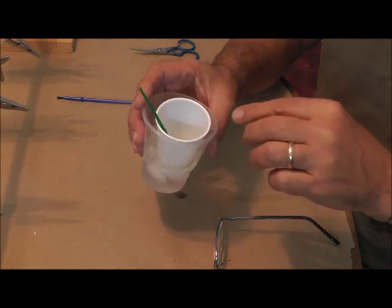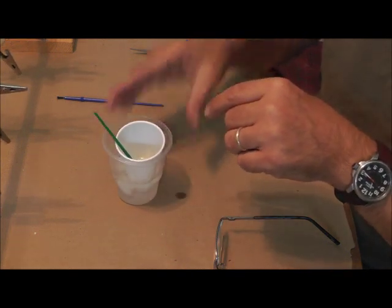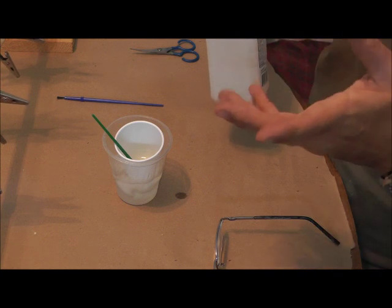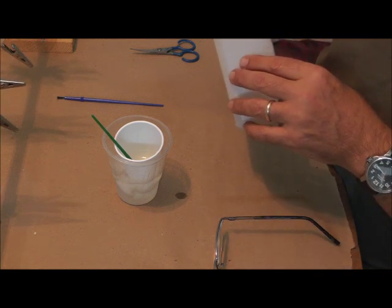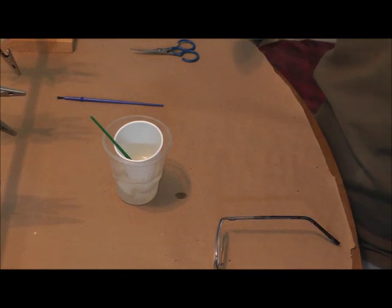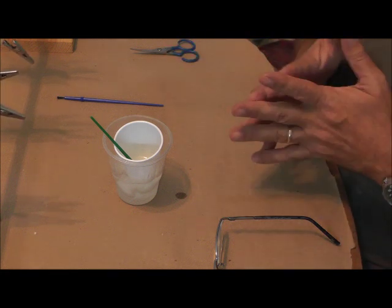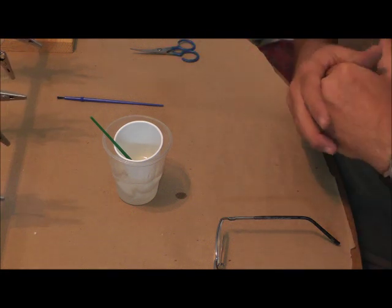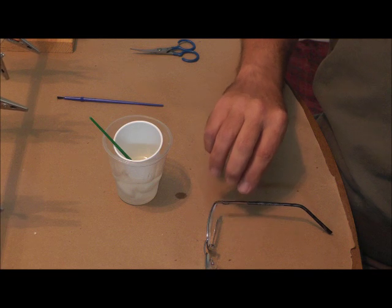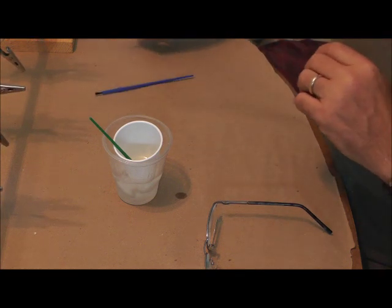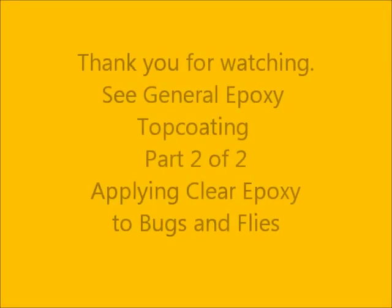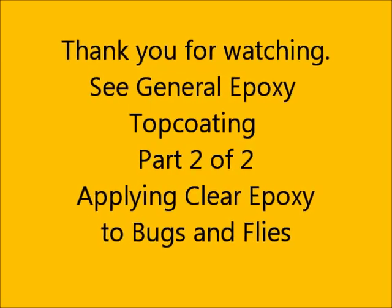Now another way of extending the cure time is to use some rubbing alcohol, either 70% or 90% works. I think it's a ratio of one to three, one part alcohol to three parts epoxy, and that works fine for painted bugs. But if you start putting that on bugs that were done colored with markers, it could make your markers bleed. So I'll just go with the ice bath. It works real well.